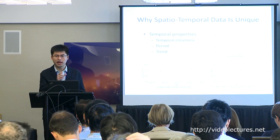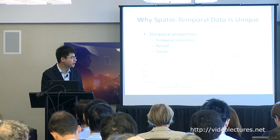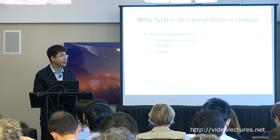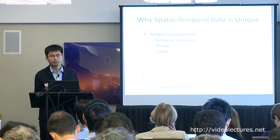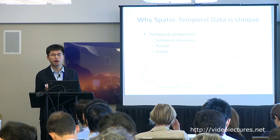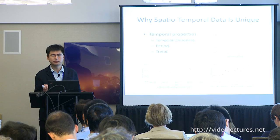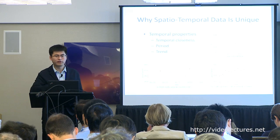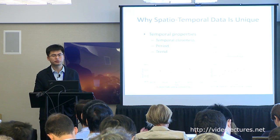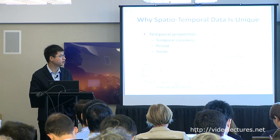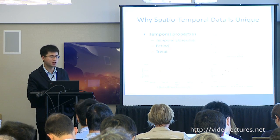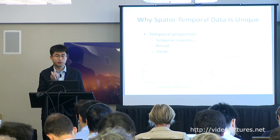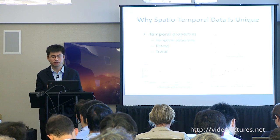This is very different from some static data. There is also trend information within a period. For example, as temperatures decrease in winter, people wake up later and later, so the morning rush-hour traffic comes later and later. There is a rising trend in traffic speed at a given time slot. We must model these spatial-temporal properties carefully — this is what makes spatial-temporal data uniquely challenging.